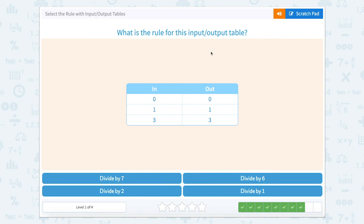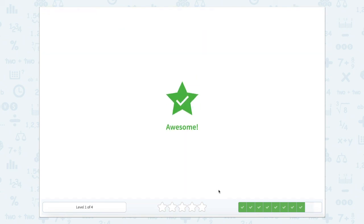So what is the rule for this input-output table? It's going to be the same thing. 0 divided by 1, 1 divided by 1 equals 1, and 3 divided by 1 equals 3. So we're going to divide by 1.